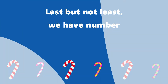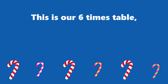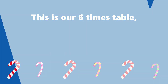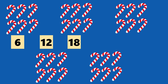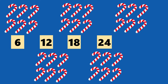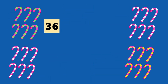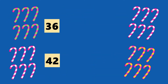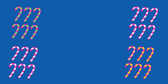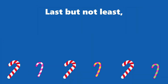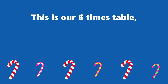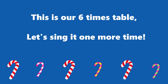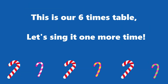we have number 60. This is our 6 times table. Let's sing it one more time: 6, 12, 18, 24 and 30, 36, 42, 48 and 54. Last but not least, we have number 60. This is our 6 times table. Let's sing it one more time.